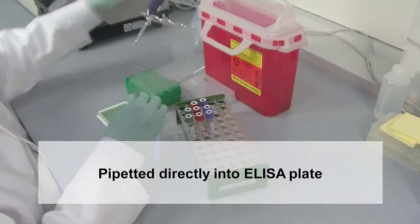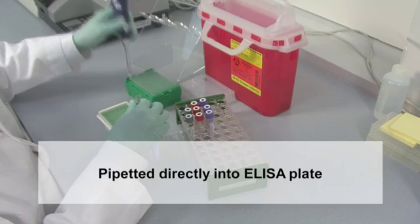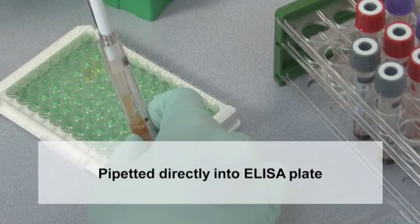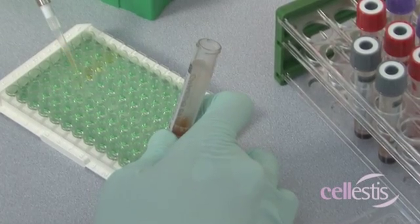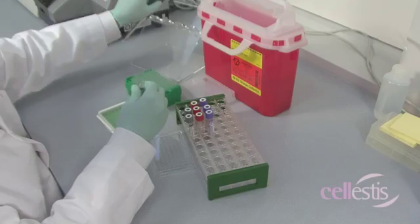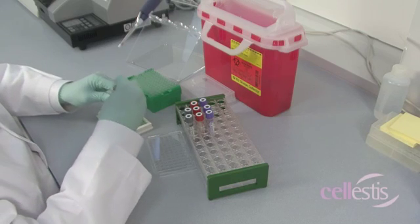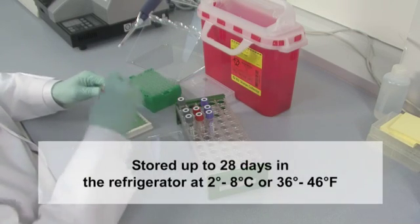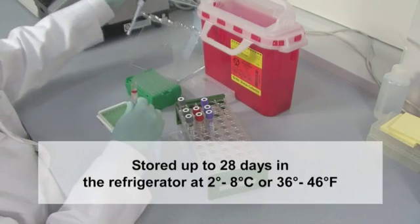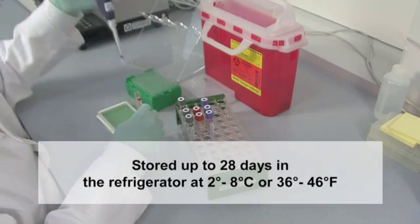After centrifugation, plasma samples can be pipetted directly into the 96-well ELISA plate for further analysis. Alternatively, the tubes containing plasma can be stored for up to 28 days in the refrigerator at 2 to 8 degrees Celsius, or 36 to 46 degrees Fahrenheit.